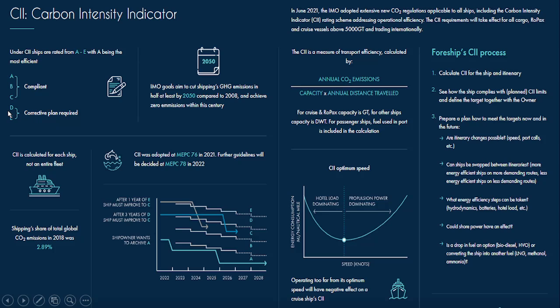If your ship falls in category D for a continuous 3-year period, in the third year you have to submit a corrective action plan stating what changes you are going to make to improve your operational performance in the next year. If the changes are acceptable, the plan will be approved. If your ship gets an E category, you have to submit a corrective action plan within one year.